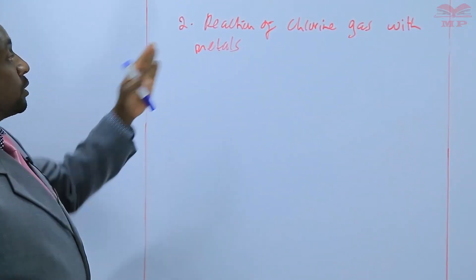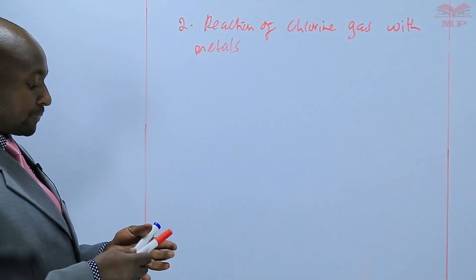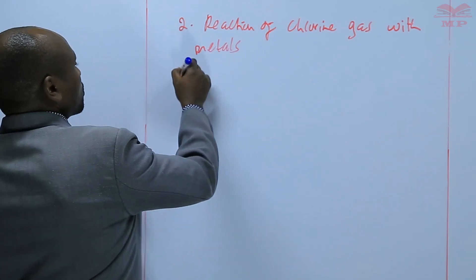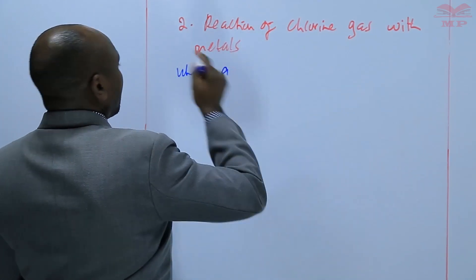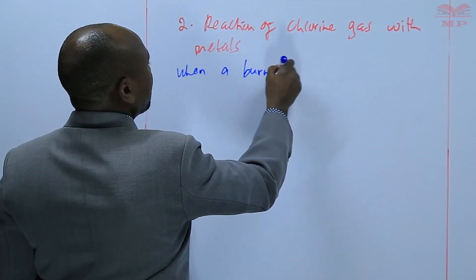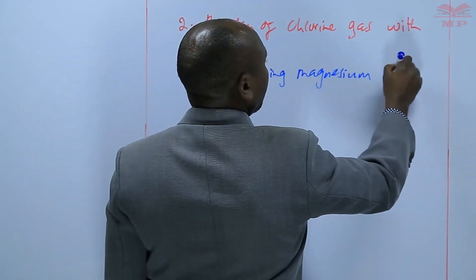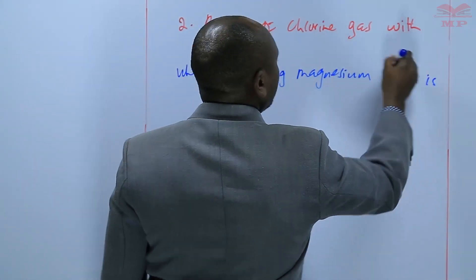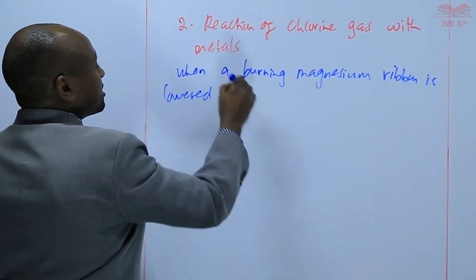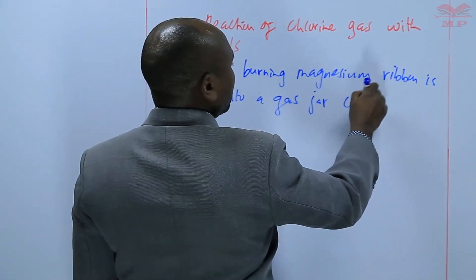We are going to discuss a number of metals and see how they react with chlorine, starting with magnesium. When a burning magnesium ribbon is lowered into a gas jar containing chlorine gas,